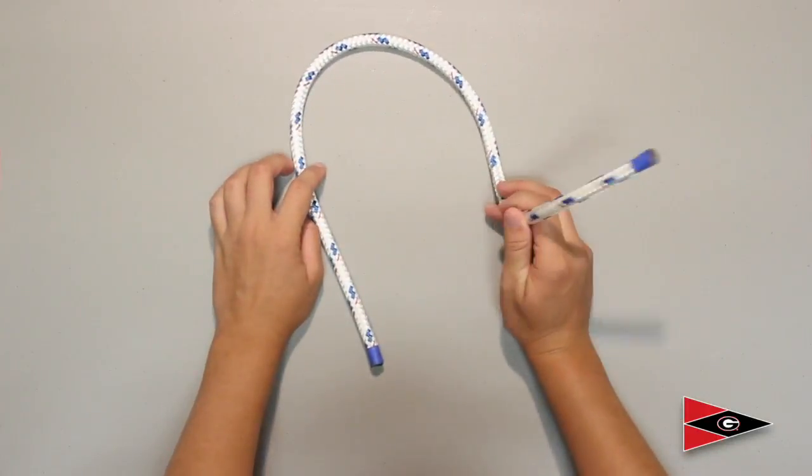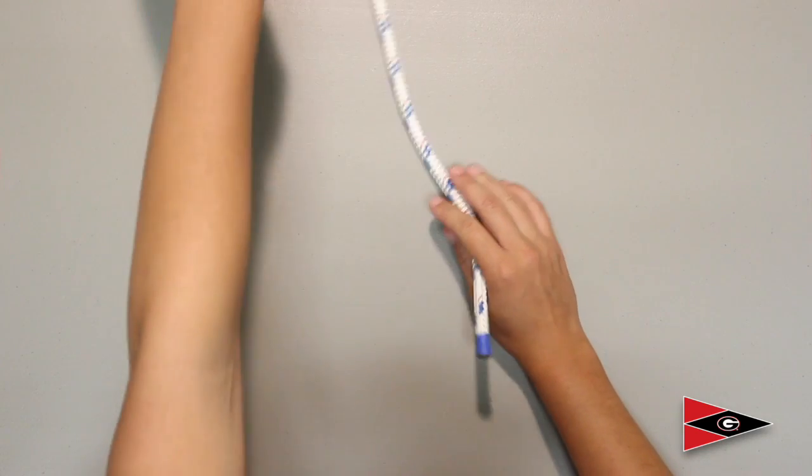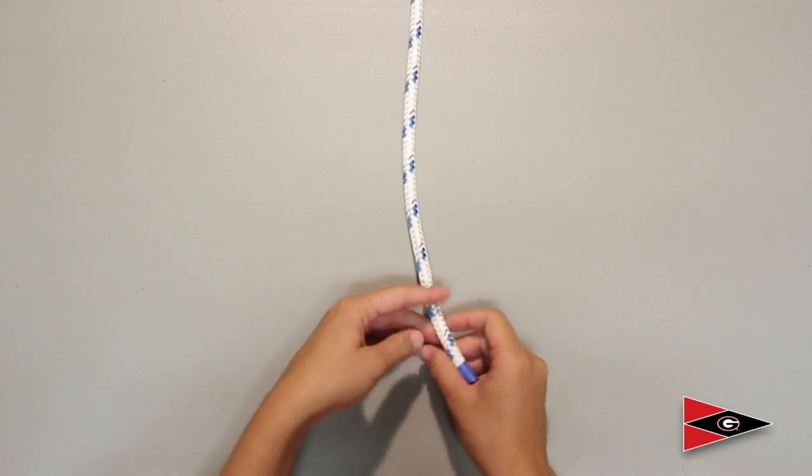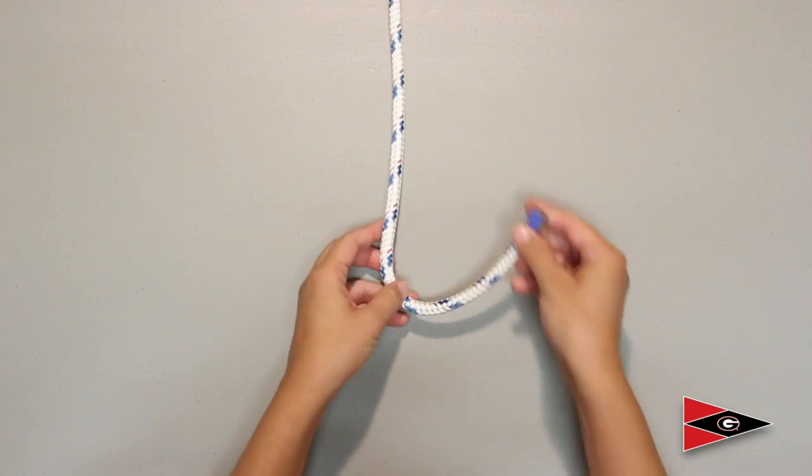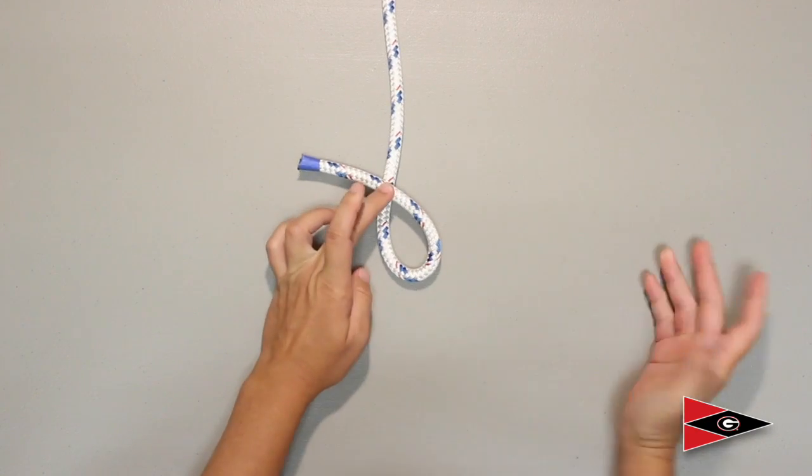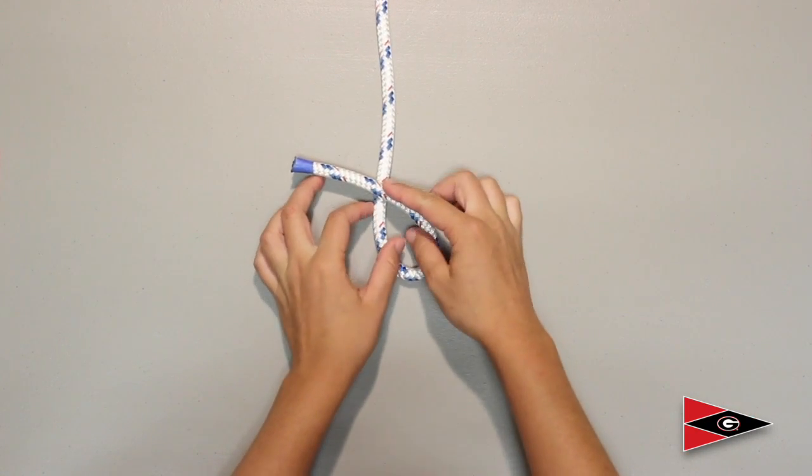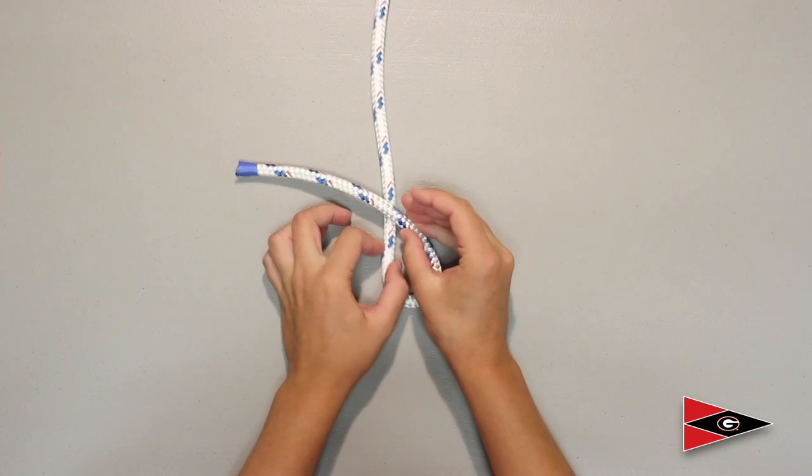The figure eight will be working with only one end of the line. So we'll stick the other one outside there. You're going to take your single tail and make a loop with the tail and cross it over itself. So that's crossed over. Give yourself a little excess to work with.